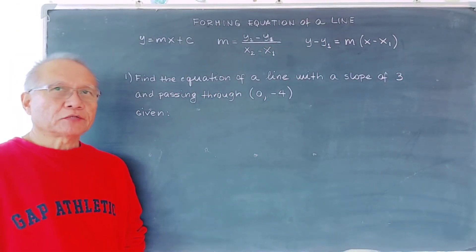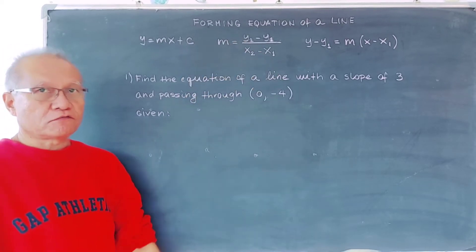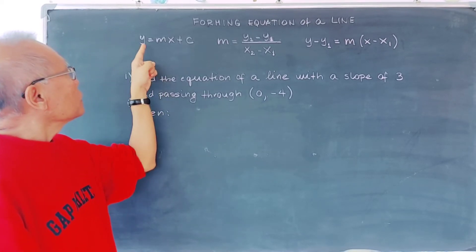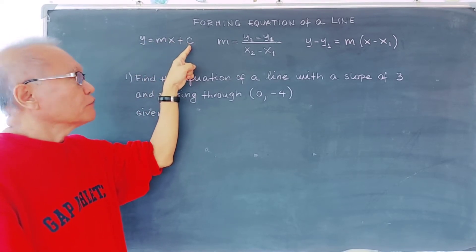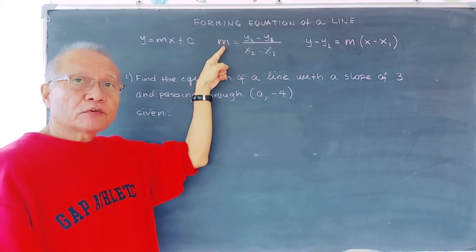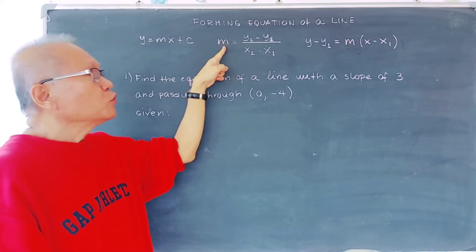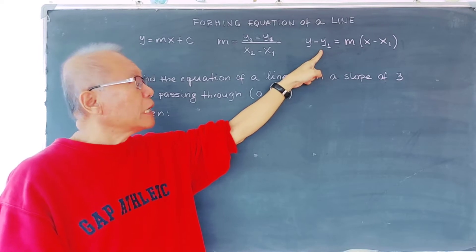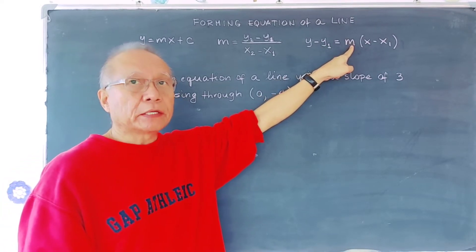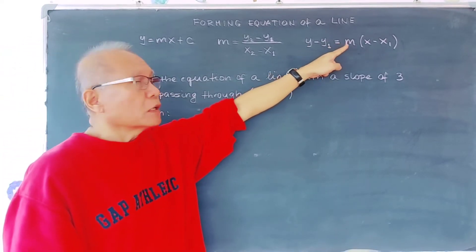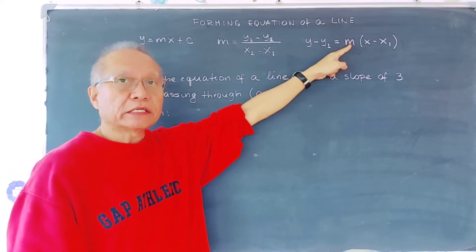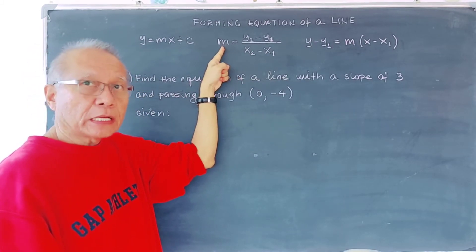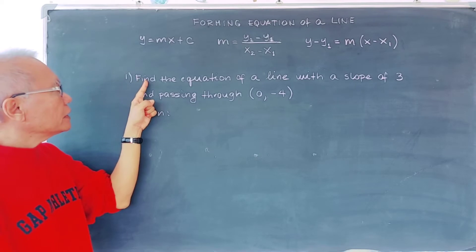Good day learners. Today we are going to study about forming the equation of a line. We have three formulas: the slope-intercept form, the formula for finding the gradient or slope when two points are given, and the formula to find the equation of a line if we have the slope and a point.